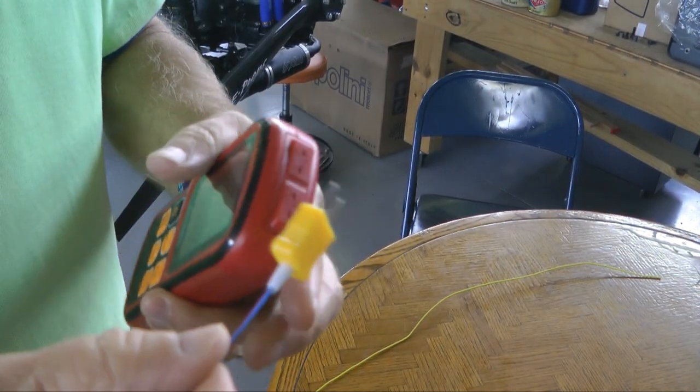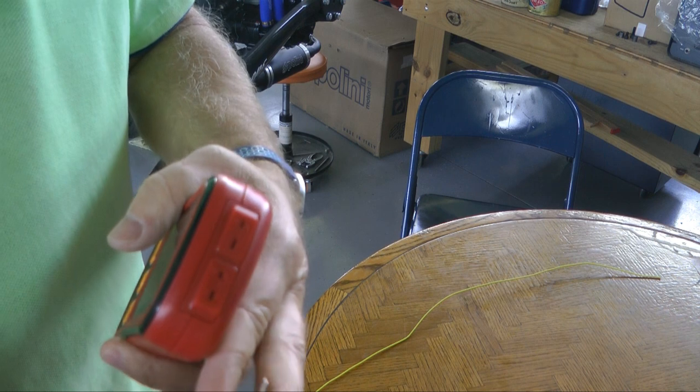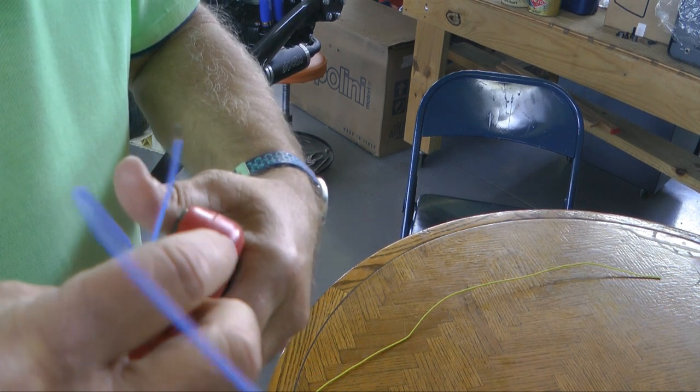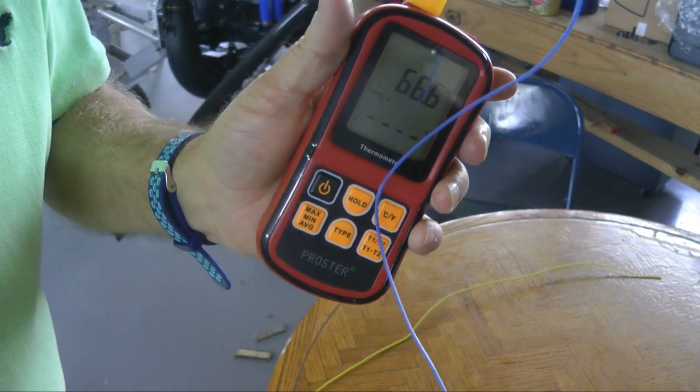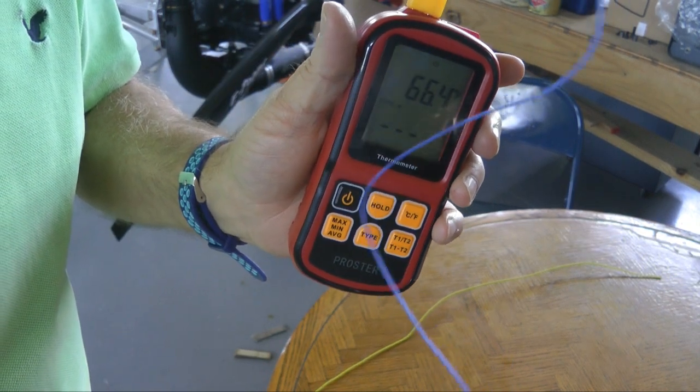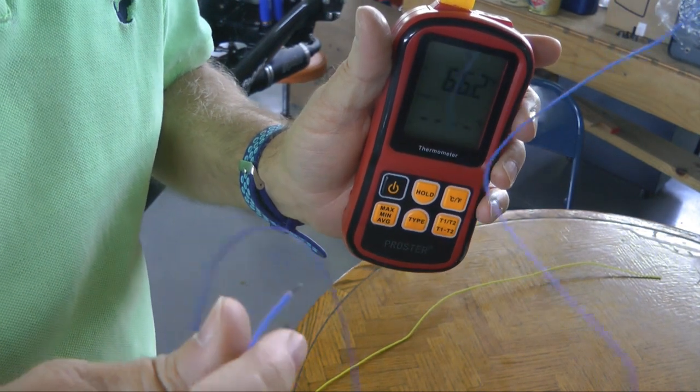Now I'm going to plug the thermocouple into the top. There we go. And you will notice 66 degrees Fahrenheit. That's basically the room temperature here.